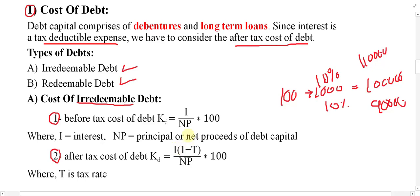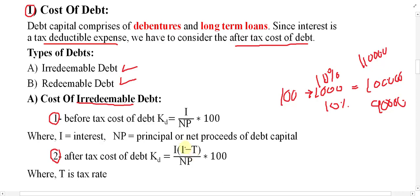The second formula is the after-tax cost of debt: KD = I × (1 − T) / NP × 100, where T is the tax rate applicable to the company. Remember: in practice, we must use the after-tax cost of debt. The before-tax cost of debt is only applicable in theory. In real or actual practice, we must apply the after-tax formula — applying the before-tax formula would be totally wrong.